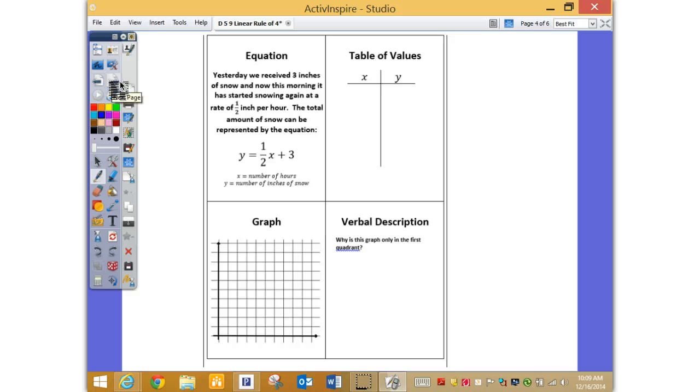All right, real-world application here. Yesterday, we received three inches of snow. Thank goodness we didn't. And now, this morning, it has started snowing again at the rate of one-half inch per hour. The total amount of snow can be represented by this equation. X equals the number of hours that it snows. Y is going to tell us the number of inches of snow total. Let's make a table of values now using that hint. What would be the three numbers I'm going to want to use? Zero, two, and negative two. Excellent. Zero, two, and negative two. Zero is the two, and it's opposite. That makes life easy.